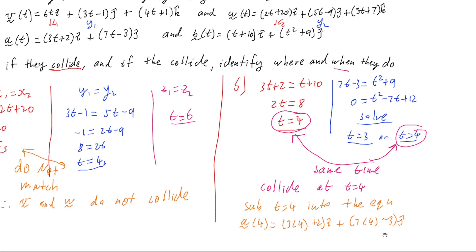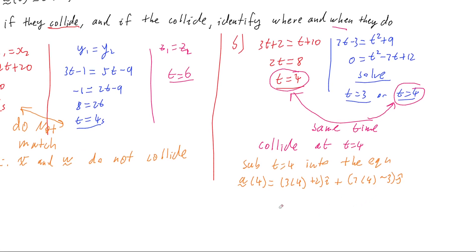Substituting in, I'm going to have 3 times by 4 plus 2i plus 7 times by 4 minus 3j. And if we work this out, then we're going to have 12 plus 2 is 14i, and 7 times 4 is going to be 28 minus 3 is 25j.